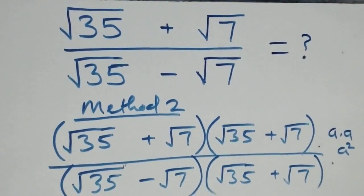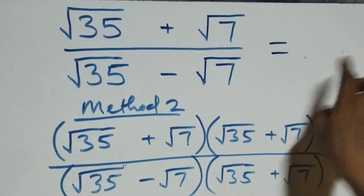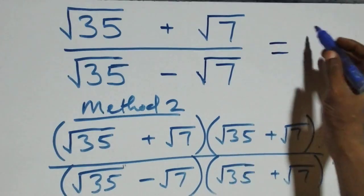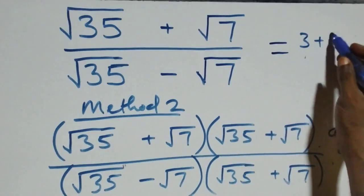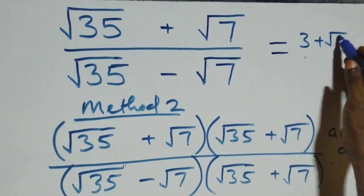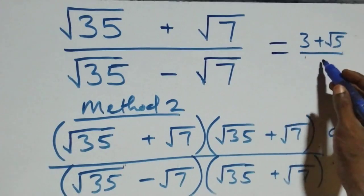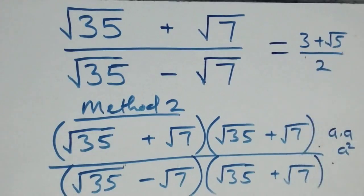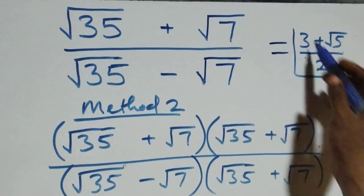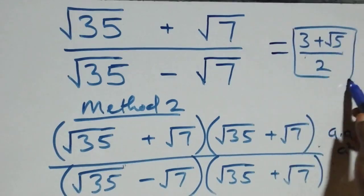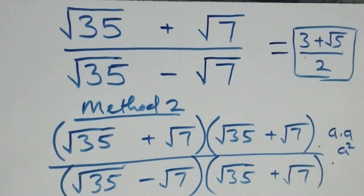Therefore we conclude that the simplified form of this square root problem is 3 plus root five all over 2. Thank you for watching — don't forget to subscribe for more videos, turn the notification bell on, share this video, give it a thumbs up, and put your comments. See you next class, bye for now.